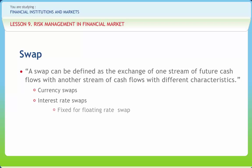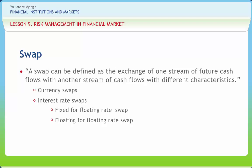Types of interest rate swaps: First, fixed-for-floating rate swap (same currency) — Party P pays or receives fixed interest in currency A to receive or pay a floating rate in currency A, indexed to X on a notional N for a tenure of T years. Second, floating-for-floating rate swap (same currency) — Party P pays or receives floating interest in currency A to receive or pay a floating rate in currency B, indexed to X on a notional N at an initial exchange rate of FX for a tenure of T years. Also, Party P may pay or receive floating interest in currency A indexed to Y on a notional N for a tenure of T years.